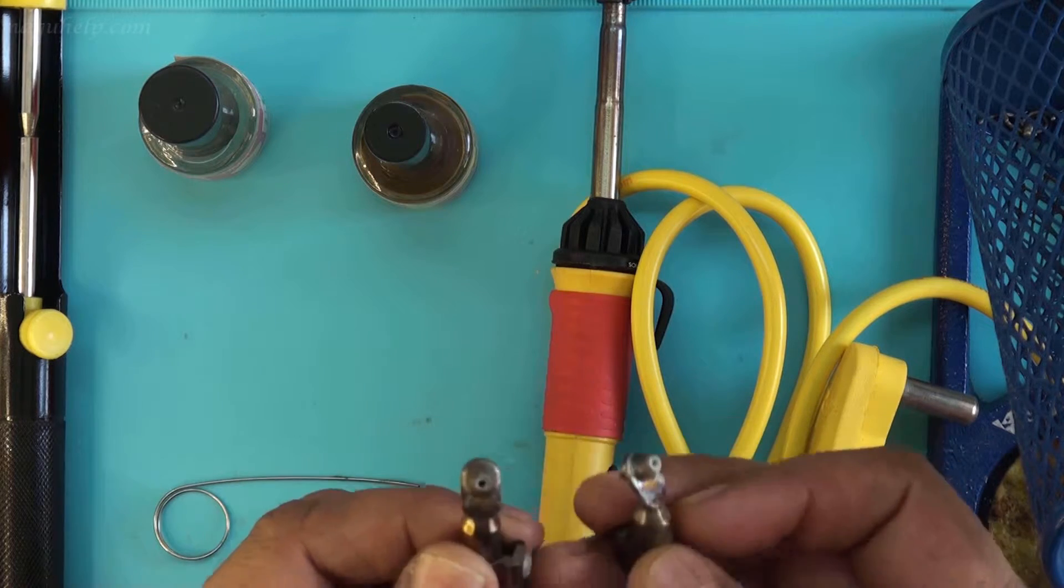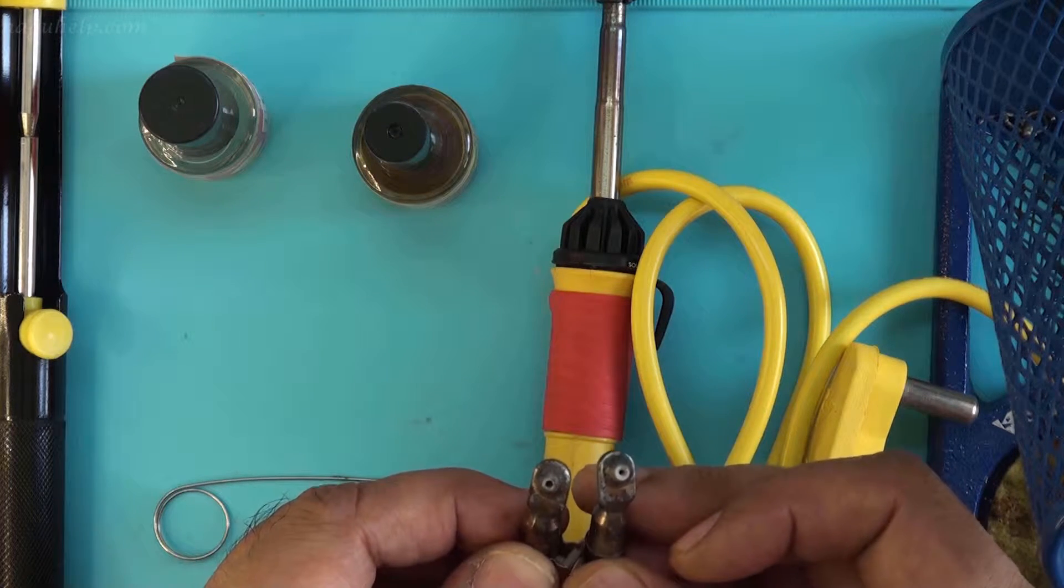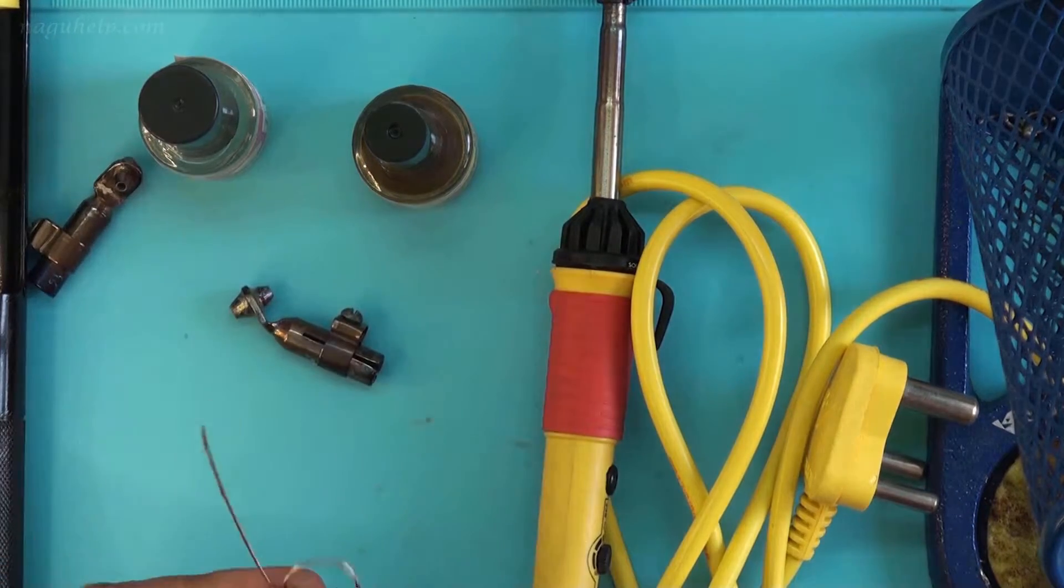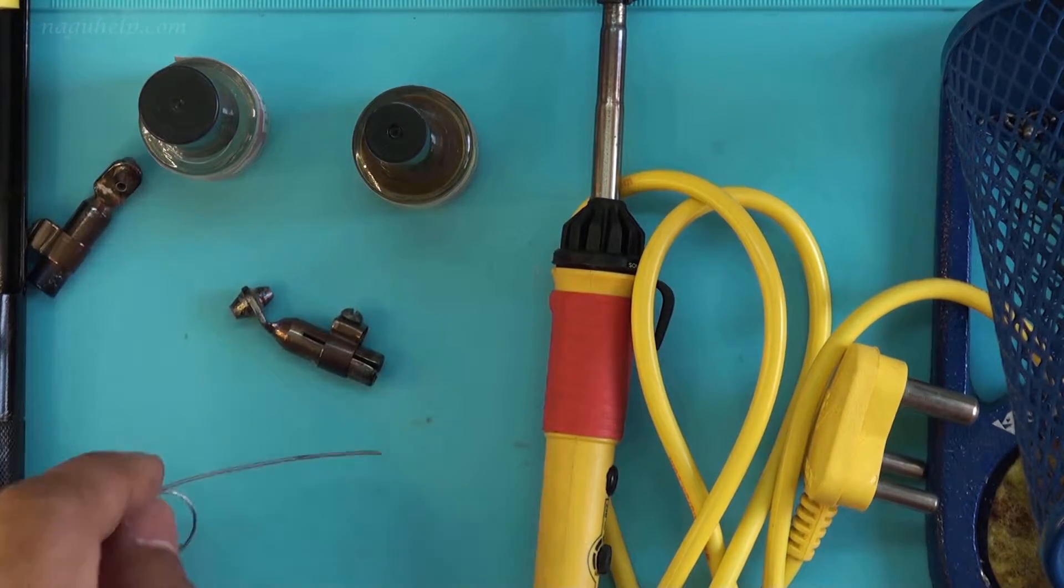These are two de-soldering suction nozzle bits. Their hole sizes are 1.1 mm and 1.6 mm. This is the stainless steel pin to clean the nozzle of de-soldering bit.